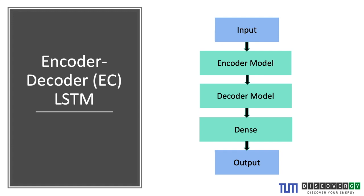In an encoder-decoder architecture, the input goes into the encoder model where it is encoded into a bottleneck, then a decoder model decodes the data, and dense layers are used to disaggregate the output.